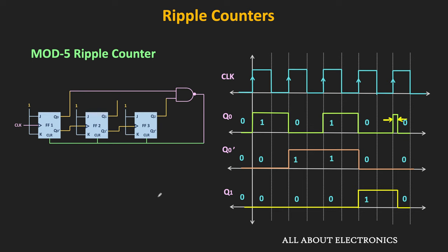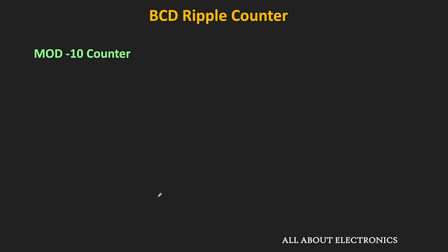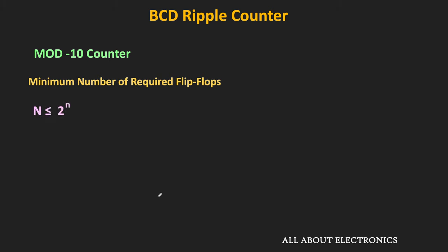Similarly, we can also design the BCD ripple counter, which is also known as the mod 10 counter. While designing this counter, the first thing is to find the required number of flip-flops. In this case, the modulus N equals 10. To satisfy the equation 2^n ≥ N, the minimum required number of flip-flops is 4. So we need 4 flip-flops for designing this BCD counter.